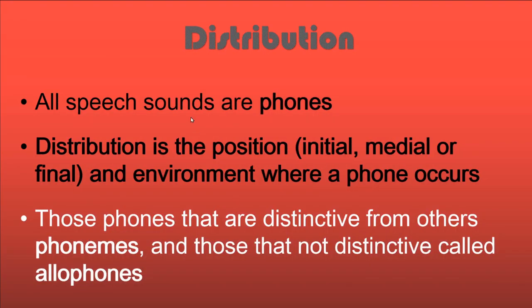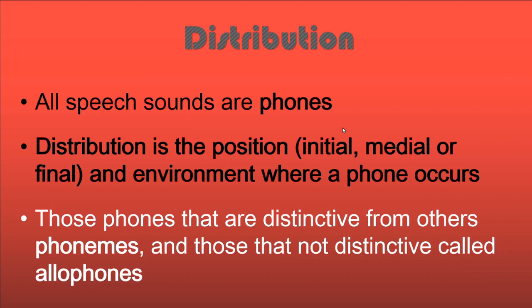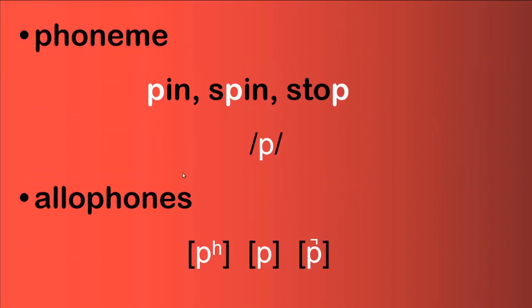Now let's look at distribution. Distribution is the position or environment where a phone occurs — whether in an initial, medial, or final part of a word. A phone means any sound; a phoneme is a phone and an allophone is also a phone. Distribution also refers to the phonetic environment — what neighboring sounds are present, such as a fricative, a voiced sound, or a vowel.